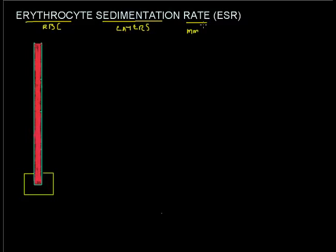To perform an ESR, or erythrocyte sedimentation rate, we basically collect blood in a tube, also called the Westergren tube. This particular tube has markings measured in millimeters — the top is zero, and these tubes are usually about 20 centimeters or 200 millimeters long, so halfway would be 100, with markings at 50 and 150.